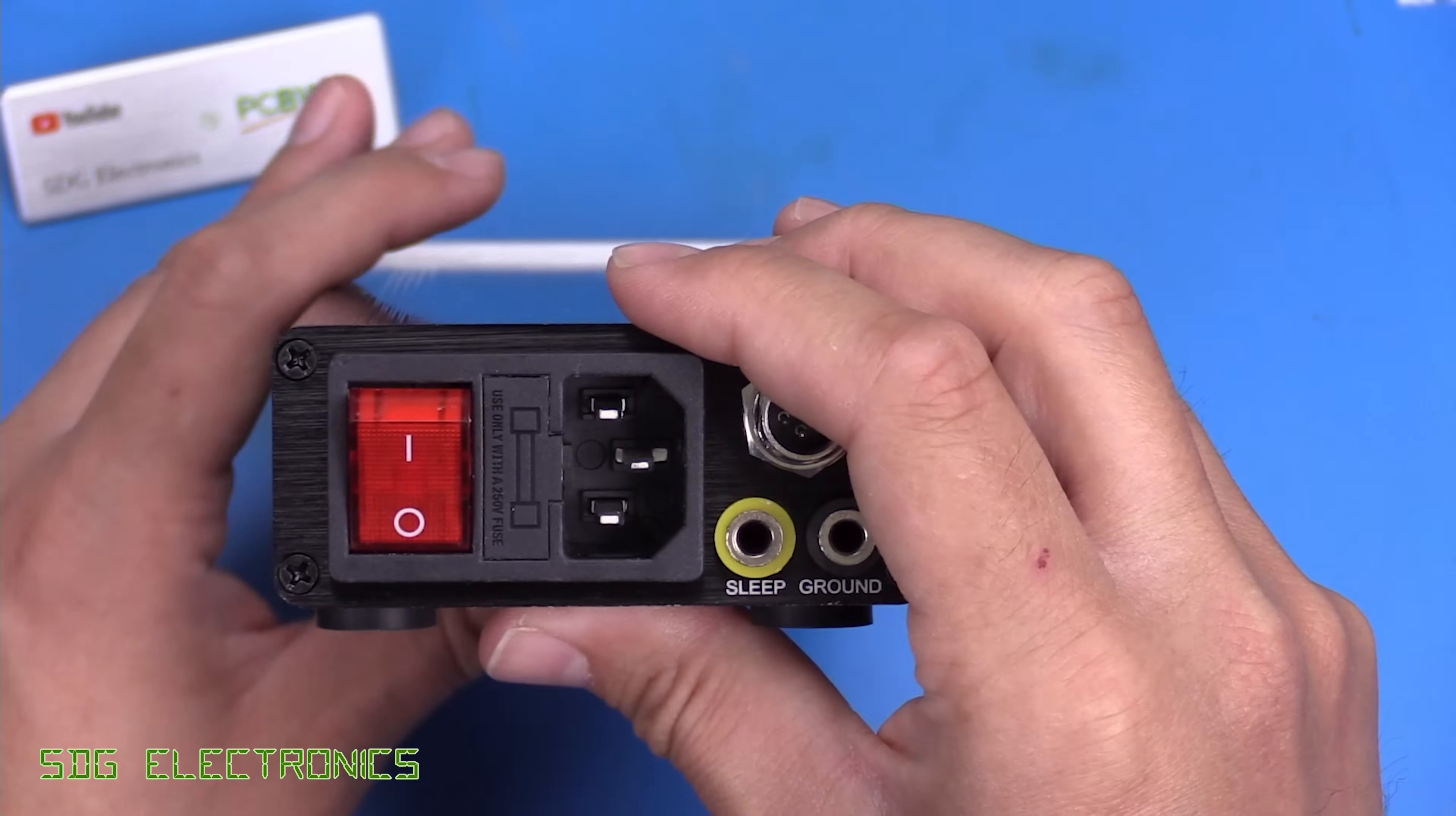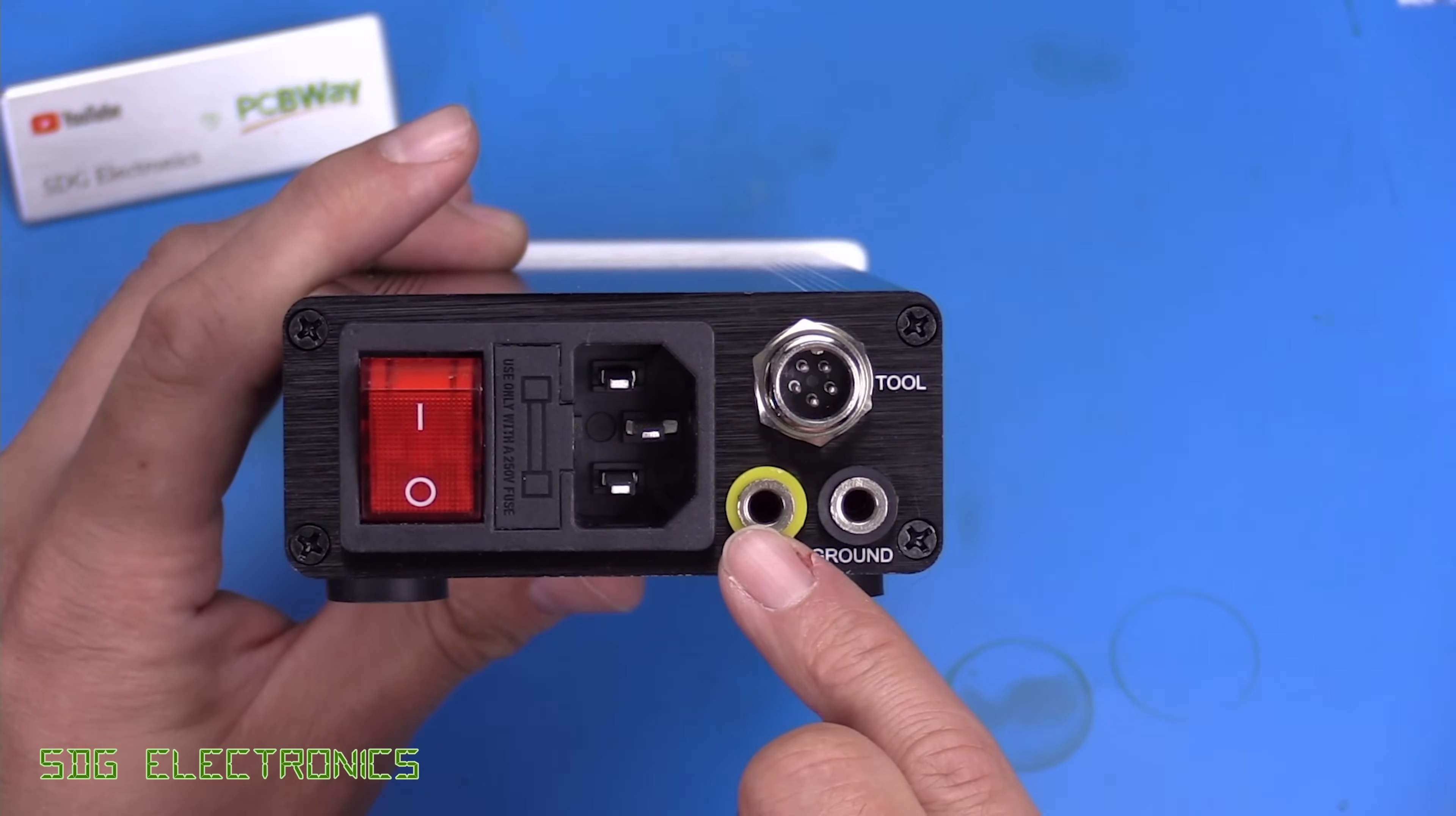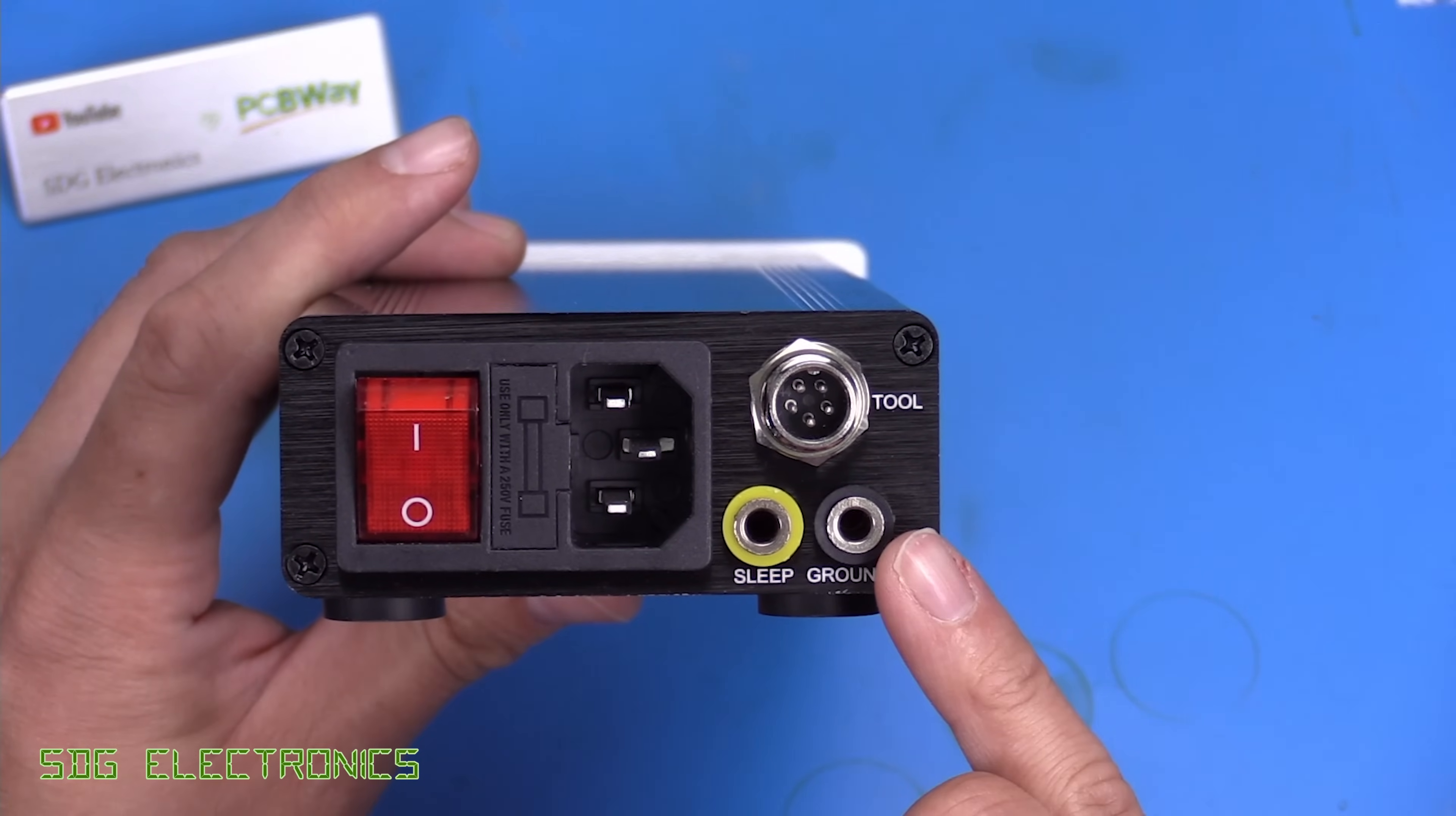And then at the back here, we've got the IEC connector with a mains power switch on the back, a fuse, connector for the tool. And then this is the connector that goes off to the stand to enable the sleep mode. And then we've got a ground for ESD protection.